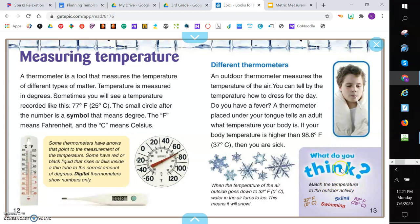And here's something for you to try. Match the temperature to the outdoor activity. Which one of these do you think you would go swimming and which one do you think you would go skiing? If you said 82 degrees Fahrenheit for swimming and 32 degrees Fahrenheit for skiing, you are correct.